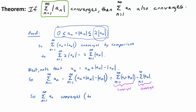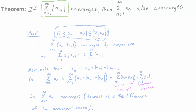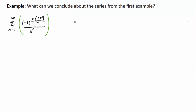The sum of aₙ converges because it is the difference of two convergent series. That completes the proof: if the sum of |aₙ| converges, then the sum of aₙ converges — absolute convergence implies convergence of the original series. Going back to the first example, we concluded the series converged absolutely, so by this theorem we can say that series converges.